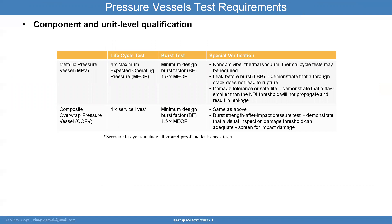Metallic pressure vessels need to be cycled to four times the maximum expected operating pressure. You also have a burst test: the metallic pressure vessel to 1.5 times the MEOP, with a burst factor of 1.5. Additional verification includes random vibrations, thermal vacuum, and thermal cycle tests. You want to ensure leak-before-burst — that metallic pressure vessels are strong enough so a through crack does not lead to rupture. You'd rather have a leak before a catastrophic event.